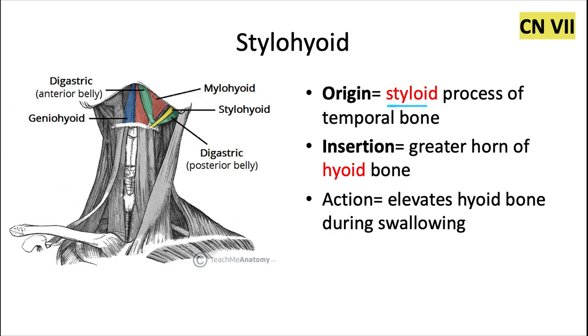So a lot of those muscles share the same function. This one, in addition to the posterior belly of the digastric, is innervated by cranial nerve 7.